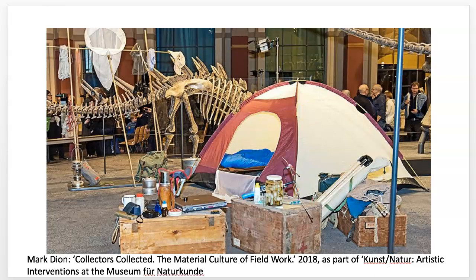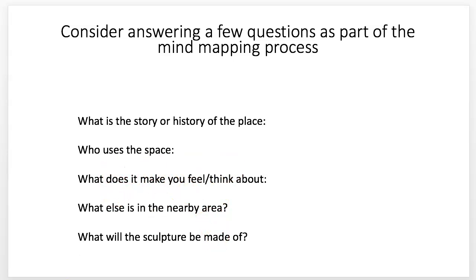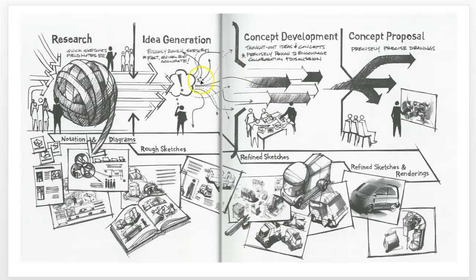You're going to want to think about how you're going to install it in the place — how does it connect to the wall or sit in the corner? Think about what else is nearby. All these things need to relate to each other: who uses the space, what's nearby, what's it made of, what does it make you think about. This is the kind of process where you're doing research and coming up with quick little sketches.